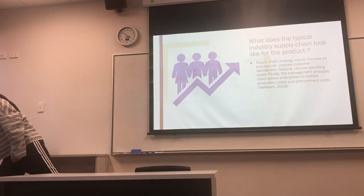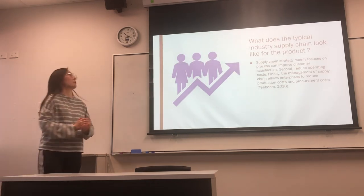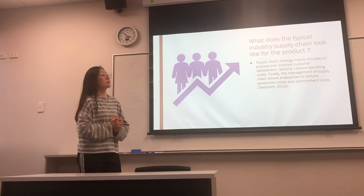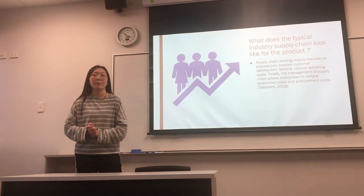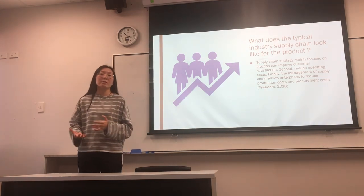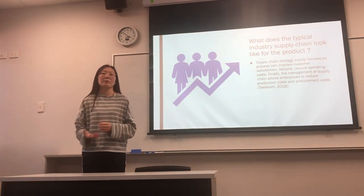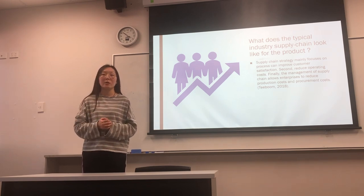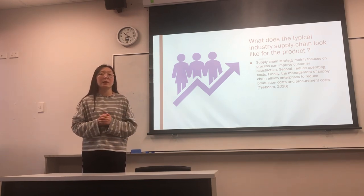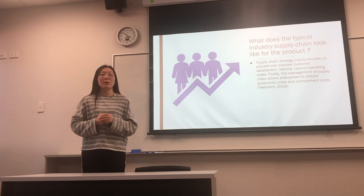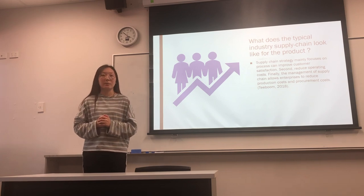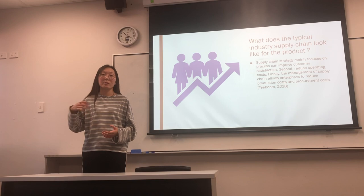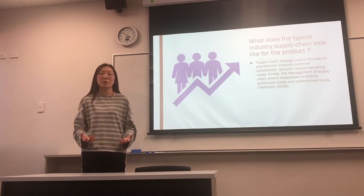The next question focuses on what does the typical industrial supply chain look like for the product. Supply chain strategy mainly focuses on processes that can improve customer satisfaction, reduce operating costs, and the management of supply chain allows enterprises to reduce production costs and procurement costs.